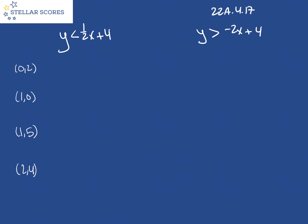So let's put this one in. Two is less than one half times zero is zero, plus four. Two is less than four. Okay, that's true.